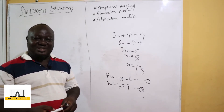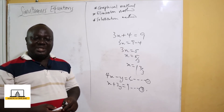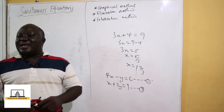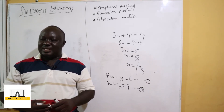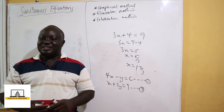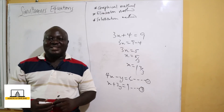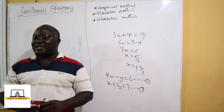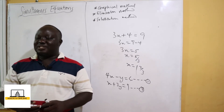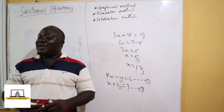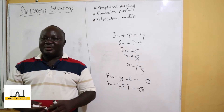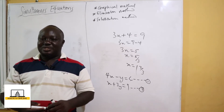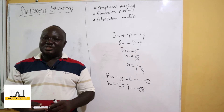We are going to look at all three methods of solving simultaneous equations. Let's start with the graphical method. For example: using a scale of two centimeters to one unit on the x-axis and two centimeters to two units on the y-axis, draw the graphs of y plus 2x equals 1 and y minus 3x equals 11 on the same graph sheet, and find the coordinates of the point of intersection.